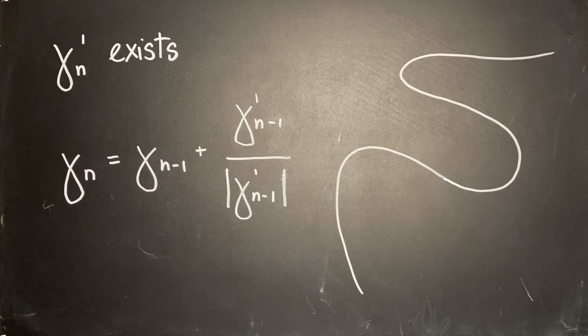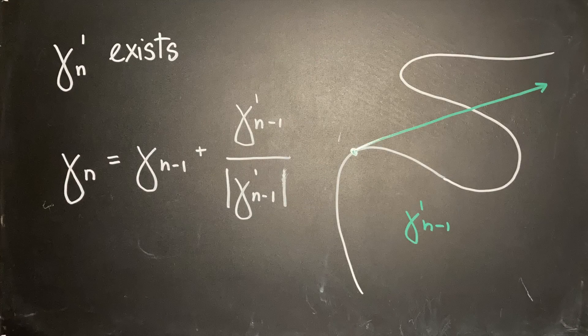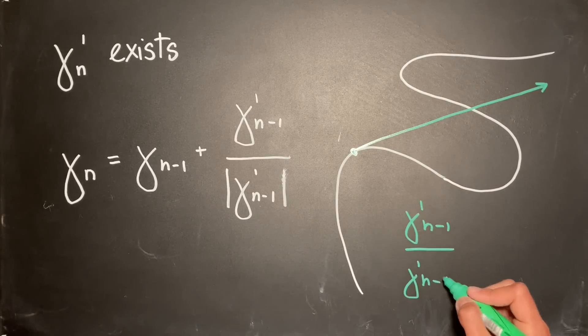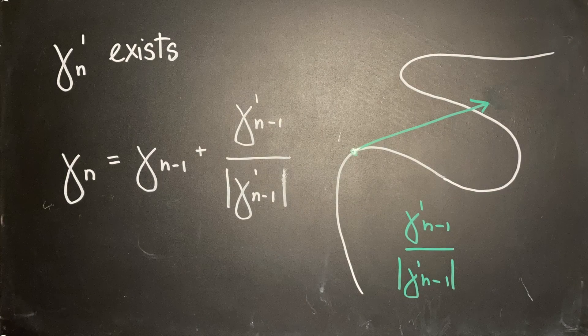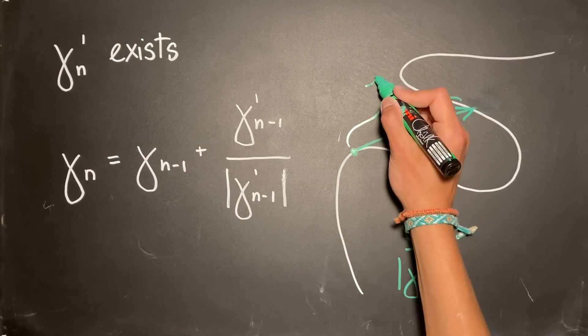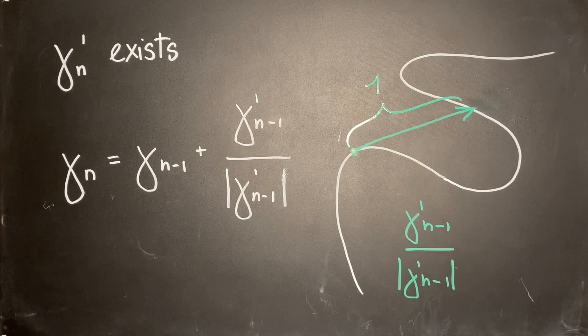Here, we divide the velocity vector gamma_(n-1)' by its magnitude to yield the vector with the same direction but scaled to a length of 1. Notice that our equation for gamma_n contains the derivative of gamma_(n-1).